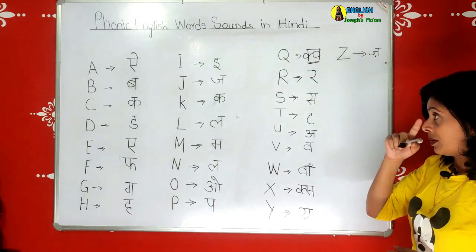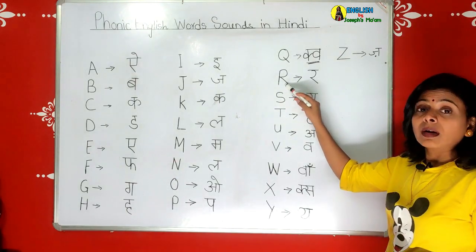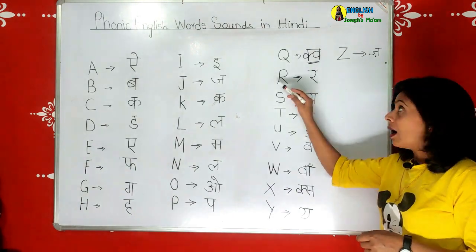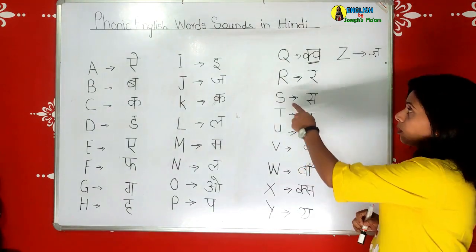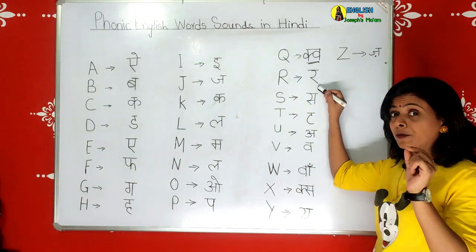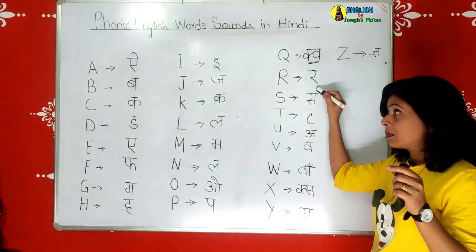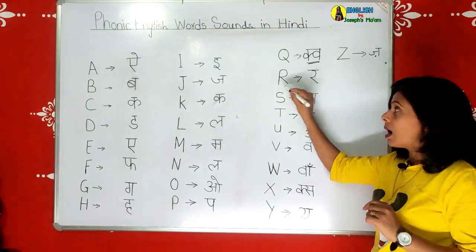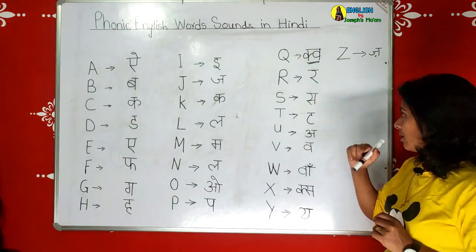Next is R. R stands for rose. The Hindi phonic is 'ra' - rose, river, red. Some say 'rad' for red - it's 'red', not 'rad'. This is R and the Hindi phonic is 'ra'.